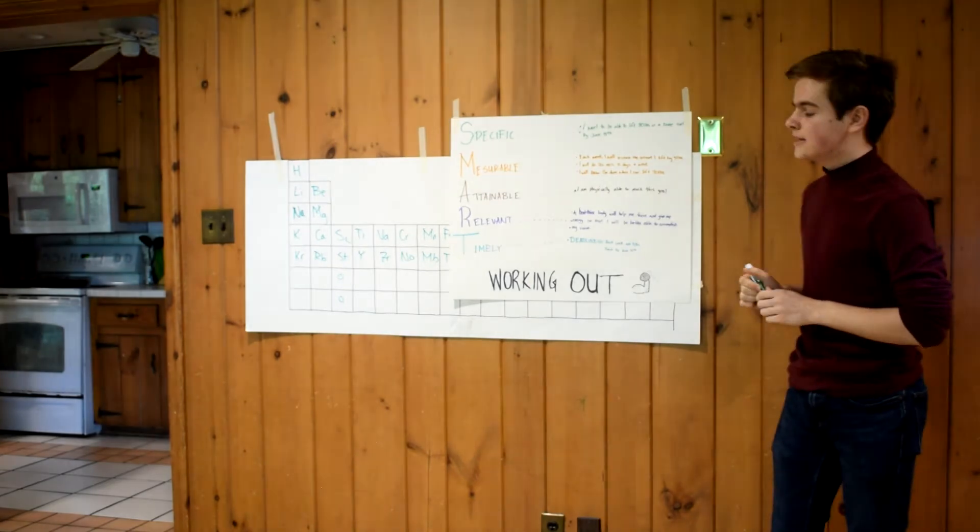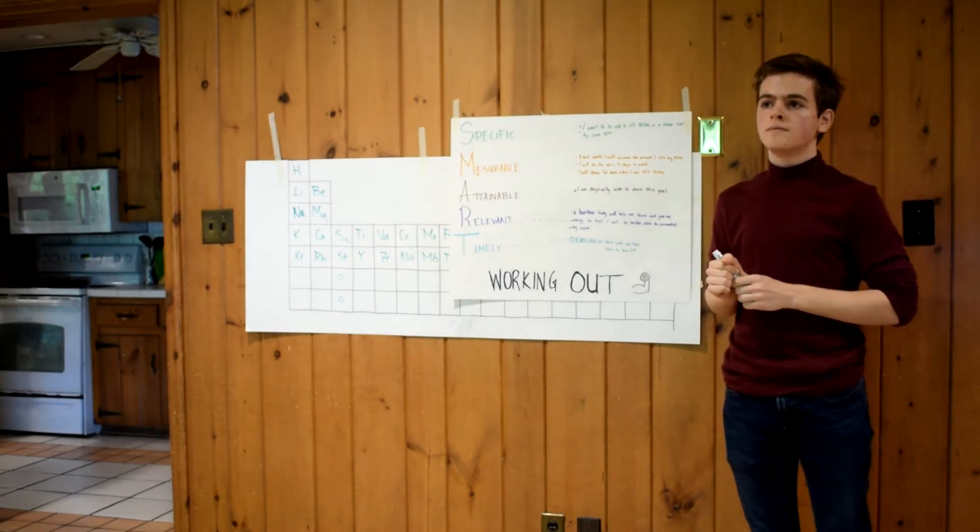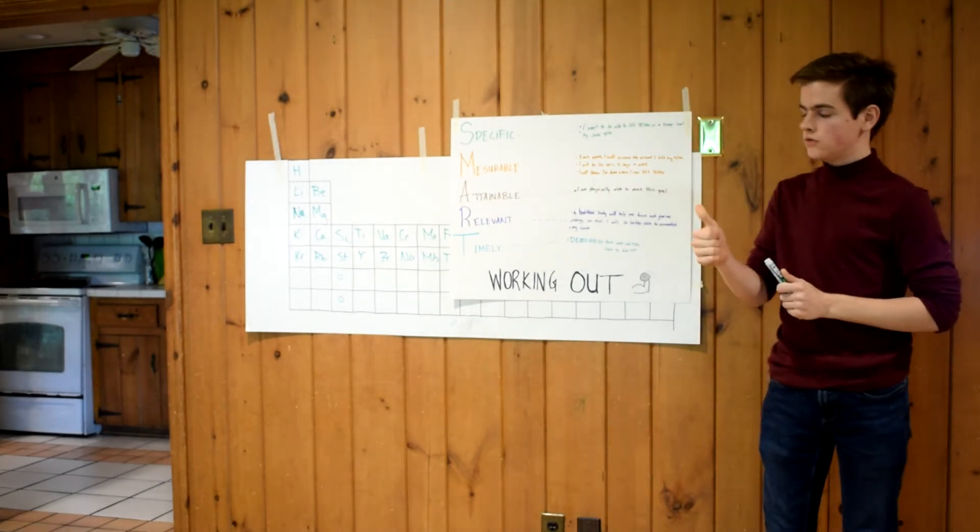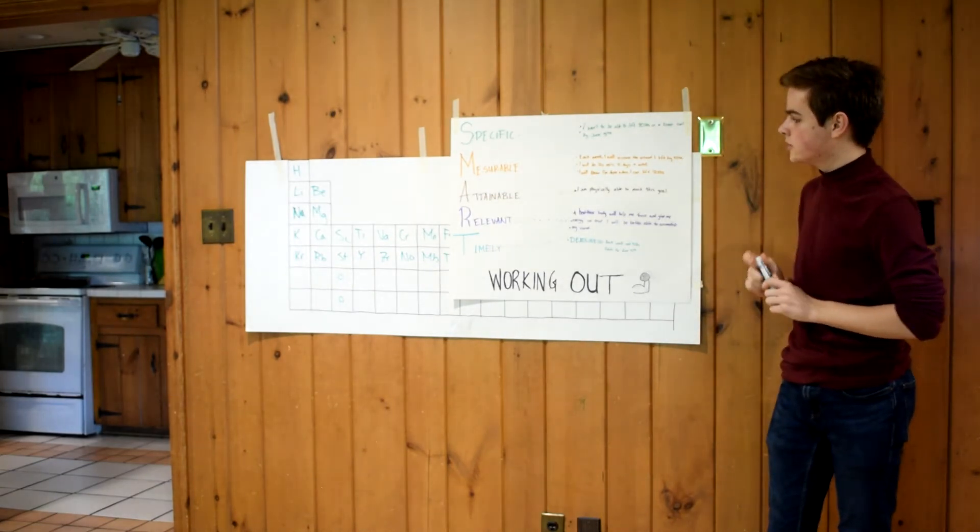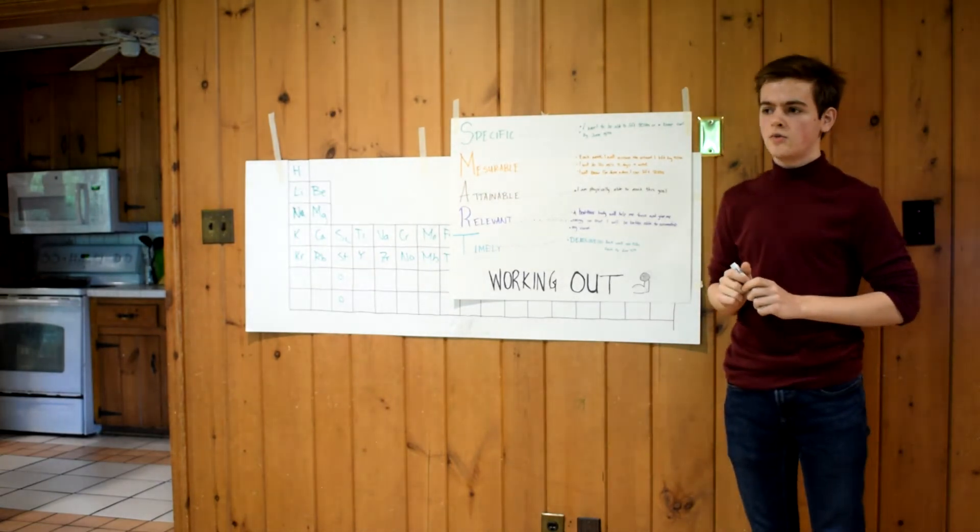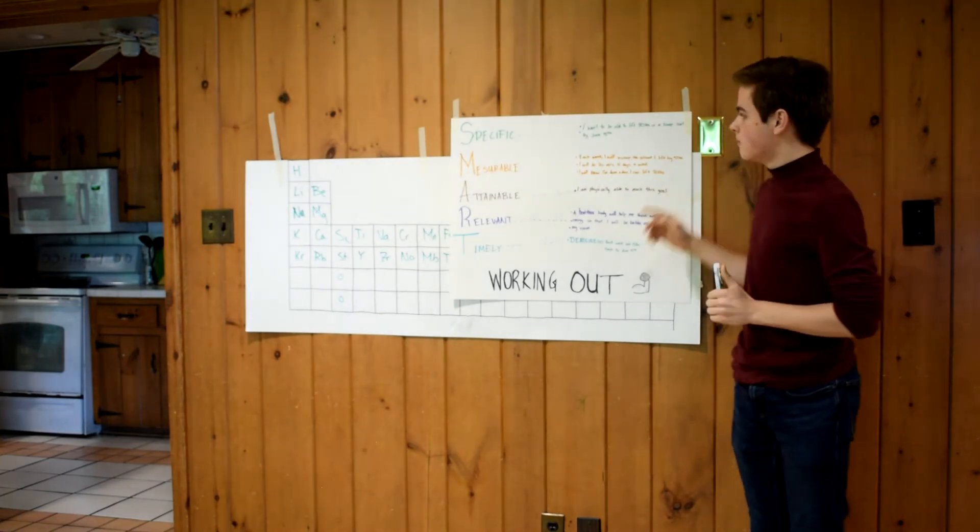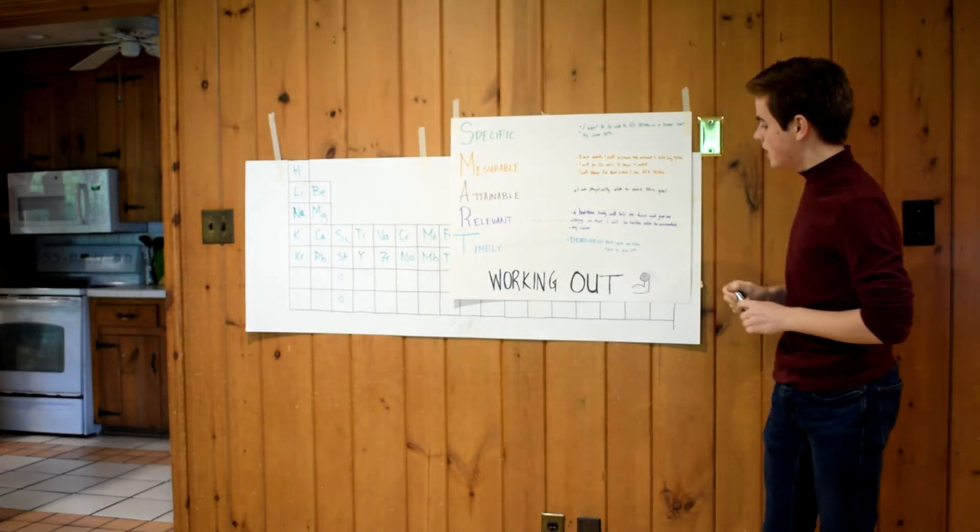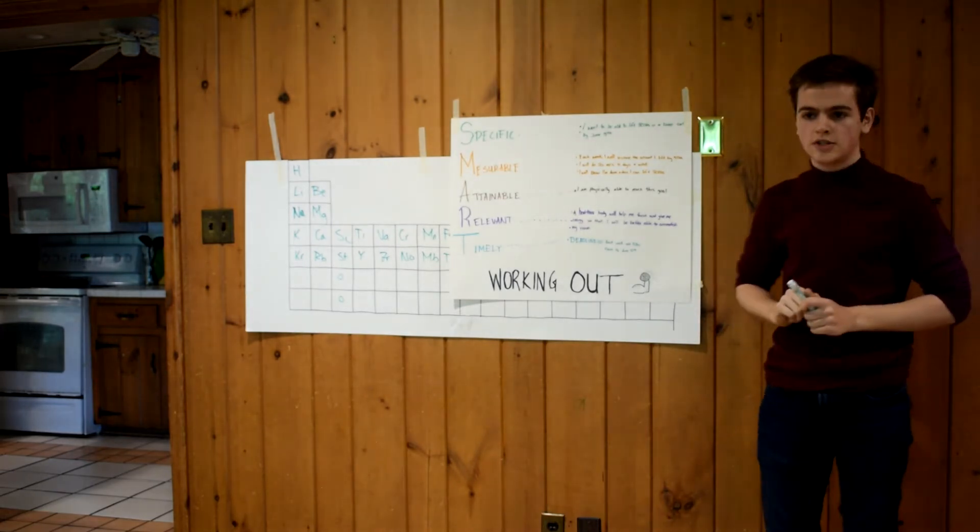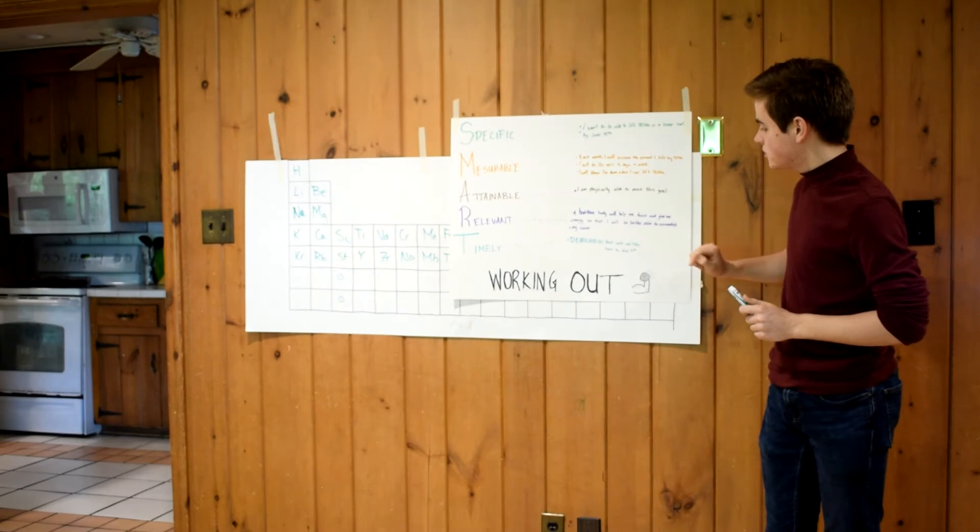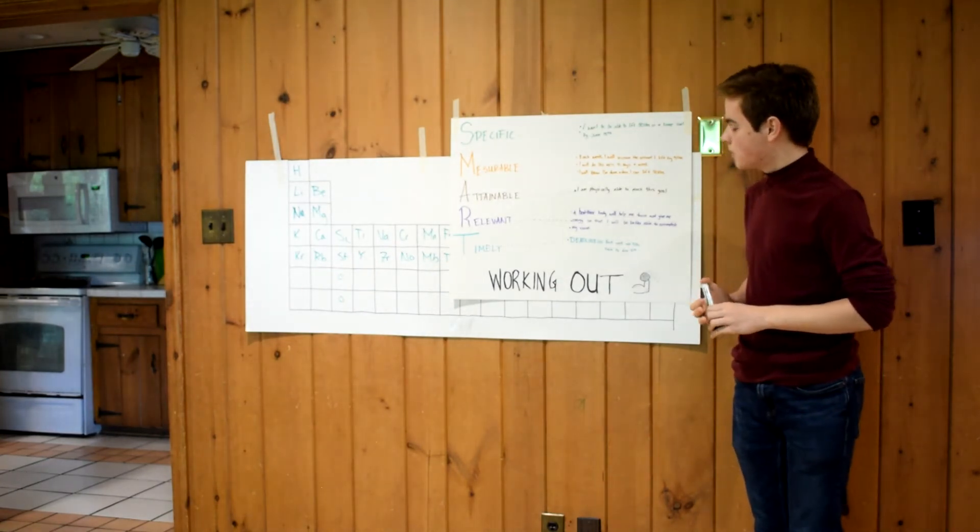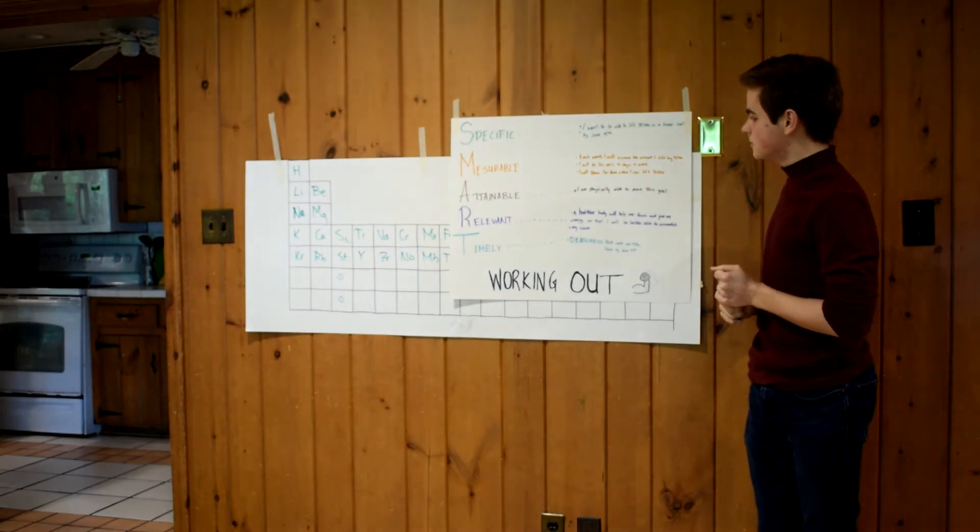Timely is the last one. And this is you holding yourself accountable. You set a deadline. June 5th. You set it in the specific part. You have your deadline. You have your increments. Measurable. Increase it by five every week. And so we have our two deadlines. Each week add five pounds to how much you lift. And finish by June 5th. So there we go. That is a SMART goal. And that's an example of working out.